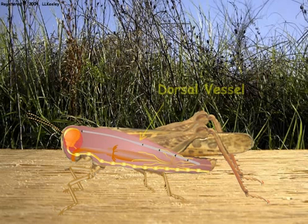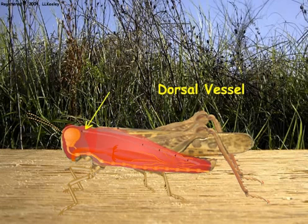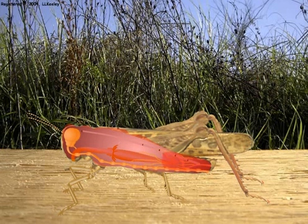The insecticide is taken up into the blood, and the dorsal vessel acts as a heart to distribute the blood containing the insecticide throughout the insect body.